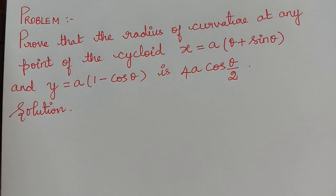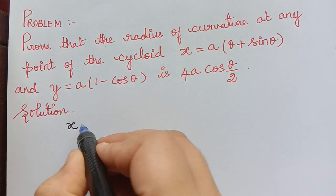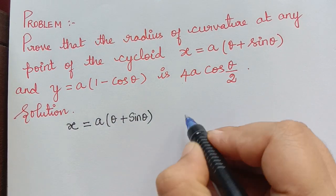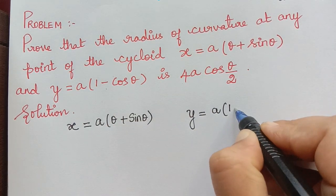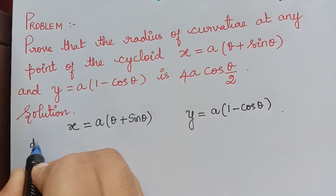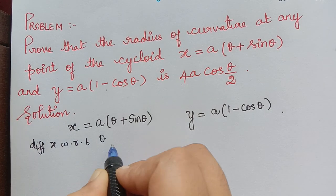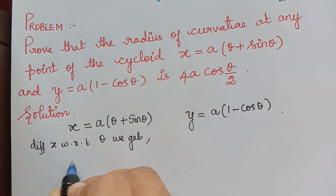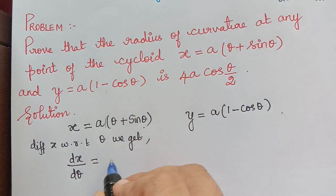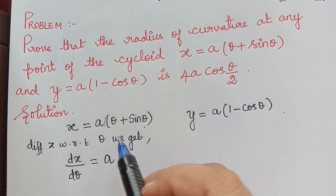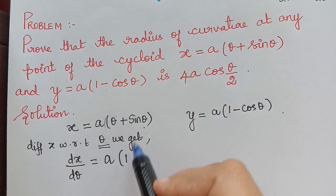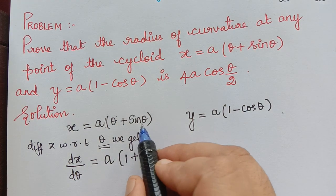The question given is: prove that the radius of curvature at any point of the cycloid x = a(θ + sin θ) and y = a(1 − cos θ) is 4a·cos(θ/2). To solve this, we first differentiate x with respect to theta. So dx/dθ equals a(1 + cos θ), since a is a constant and the derivative of sin θ is cos θ.